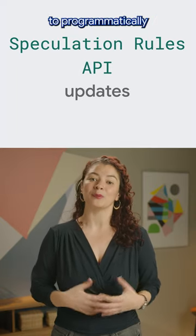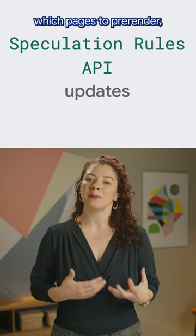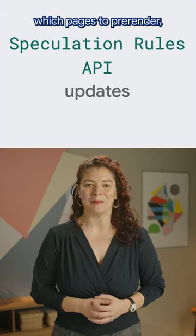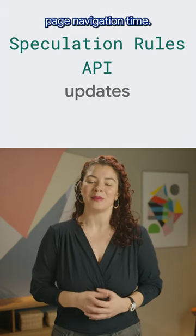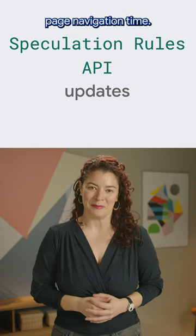Sites can use the Speculation Rules API to programmatically tell Chrome which pages to pre-render, creating a better user experience by reducing page navigation time.